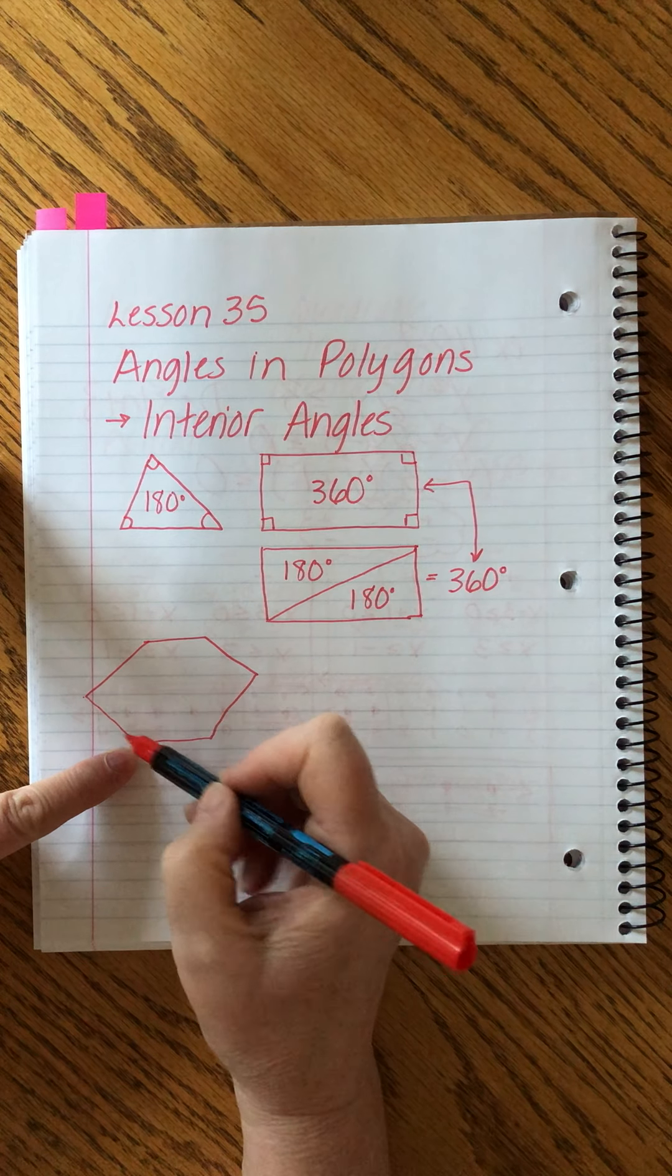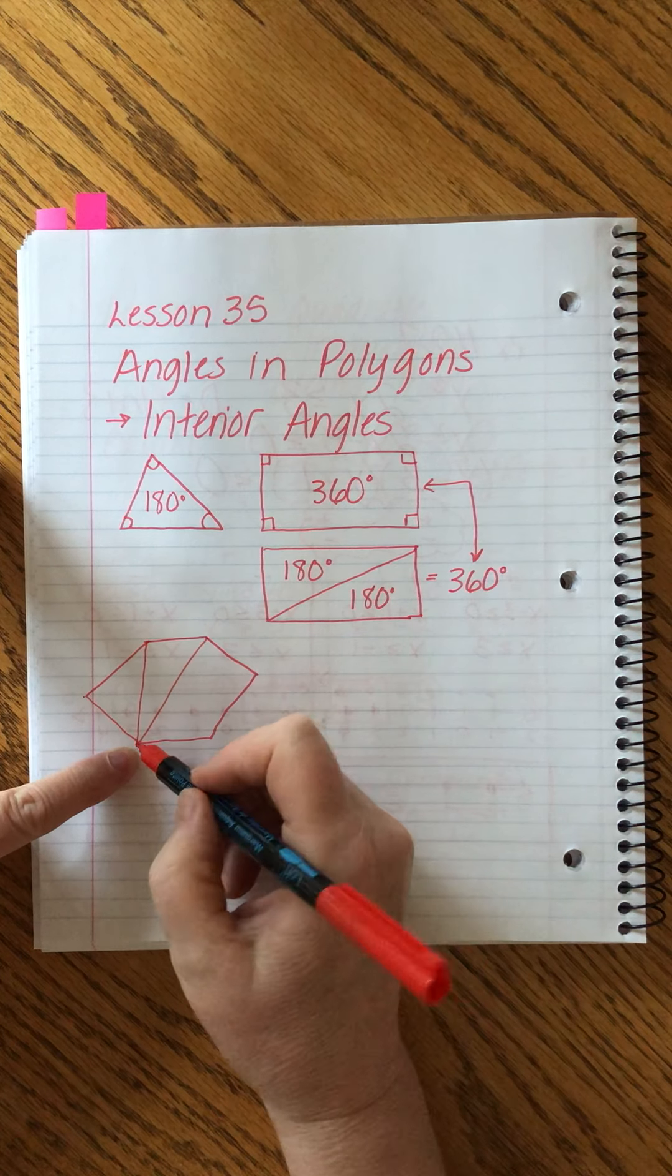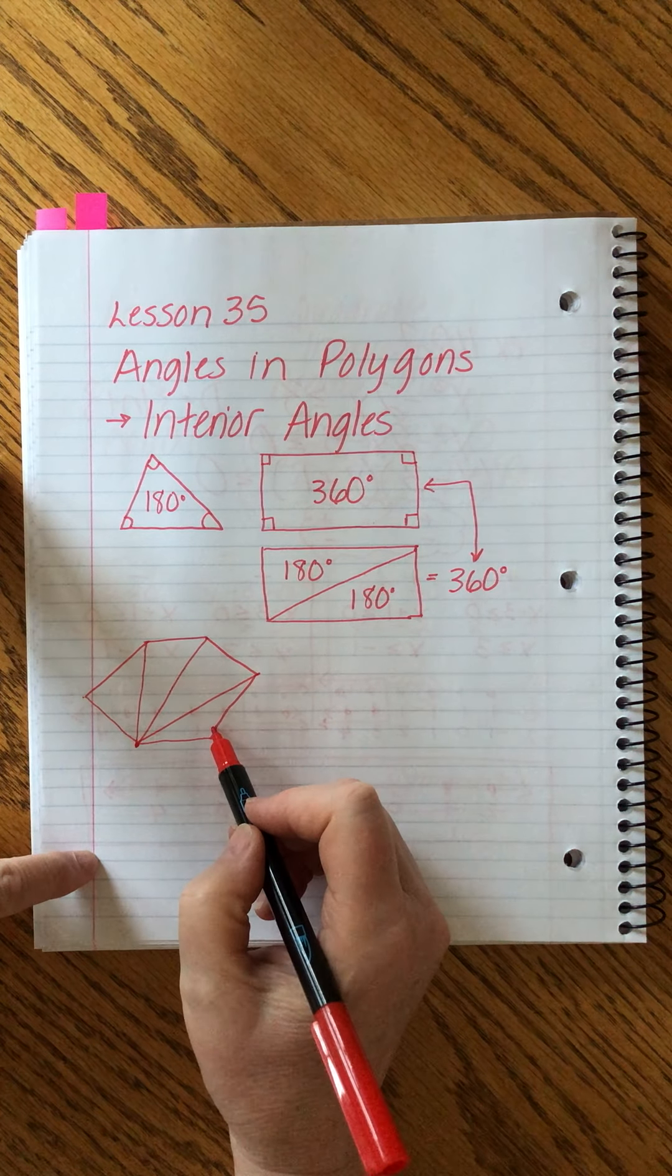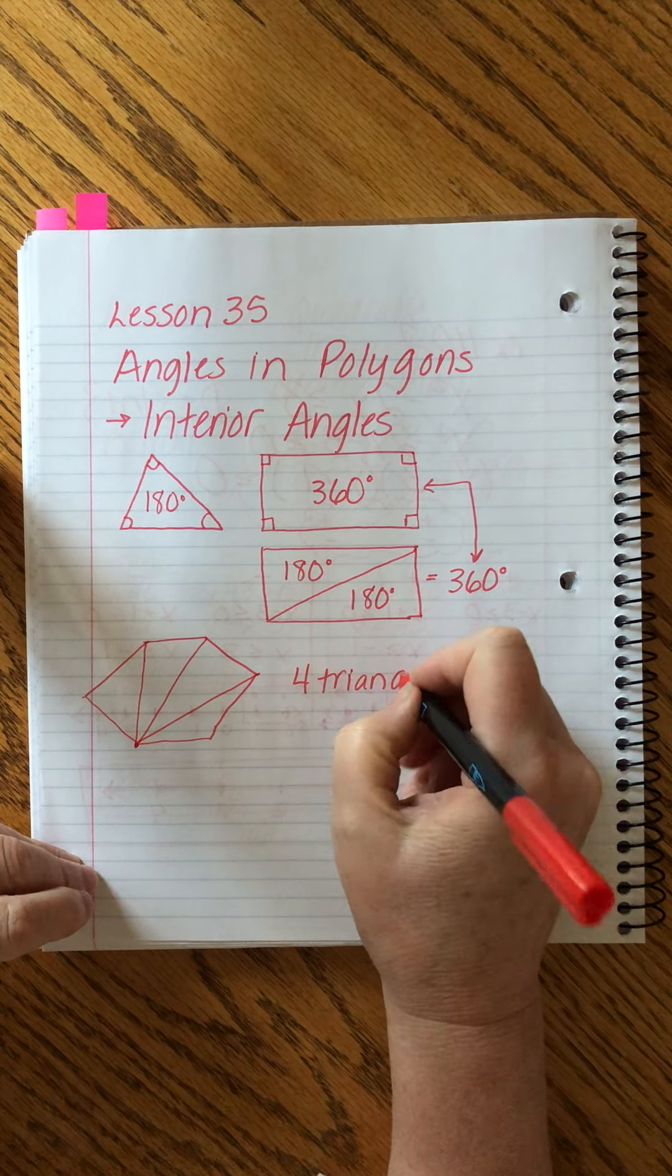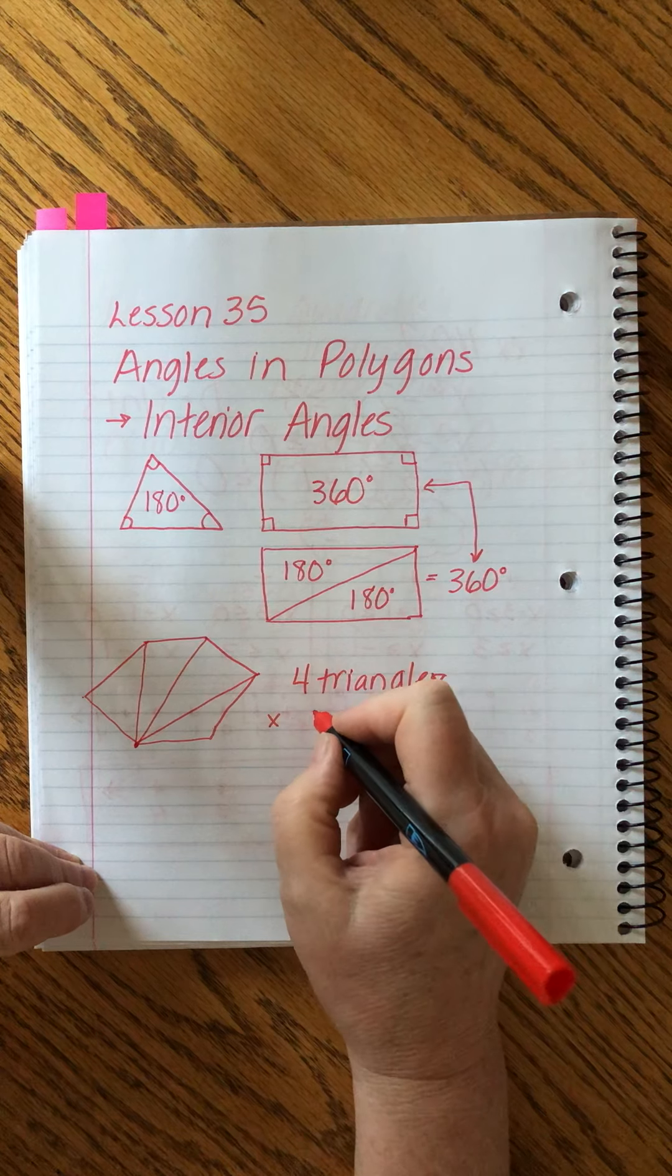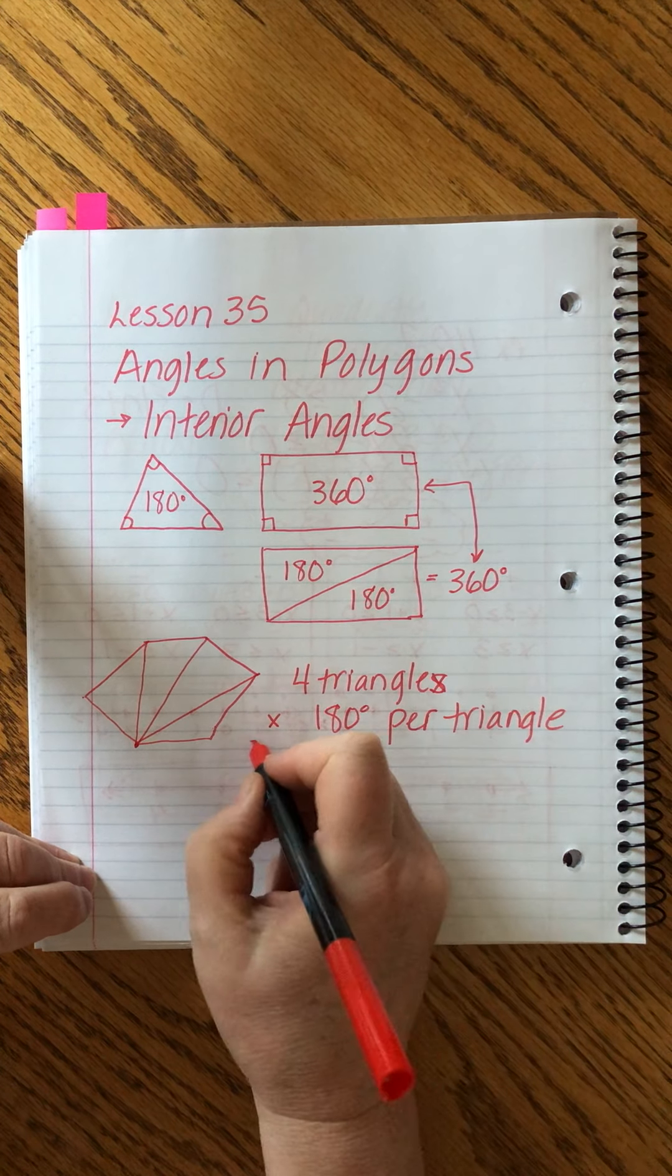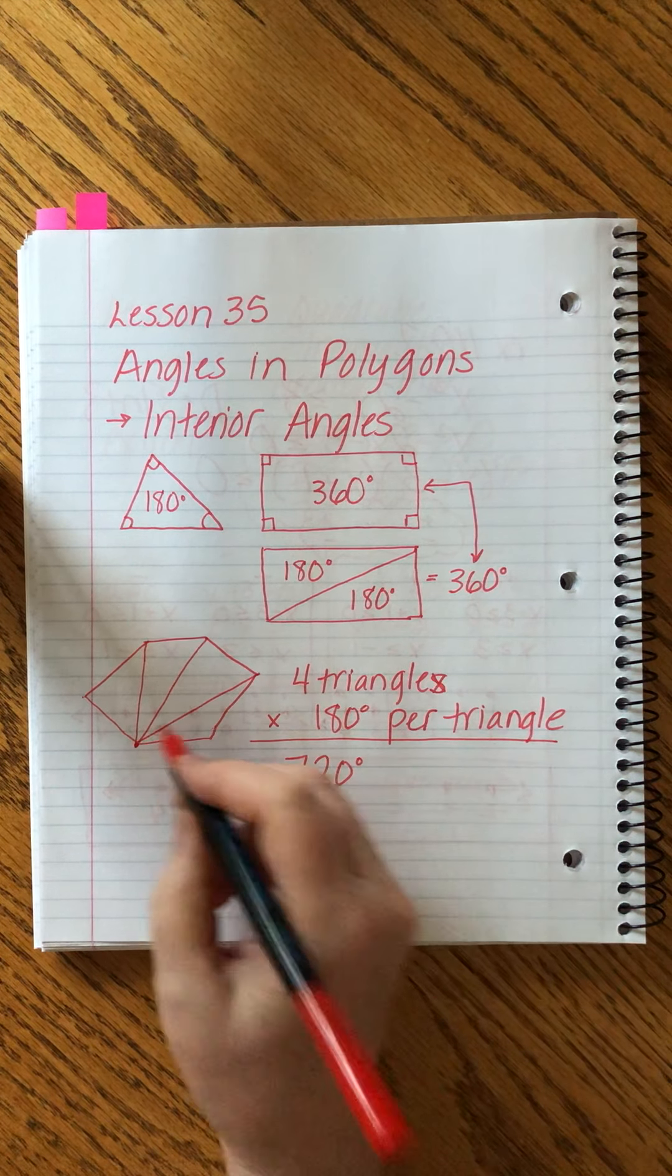From here to here, well I already have a line there. From here to here, from here to here, always drawing from the same beginning point. So what I see is that I have four triangles that make this up. I was thinking triangles because I'm going to multiply it by 180 degrees per triangle. And that gives me a total of 720 degrees for this object.